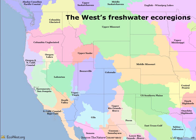Here's a close-up of the West showing its two dozen or so freshwater ecoregions. The geographic definitions don't always line up with the boundaries of river basins. The Colorado River Basin, for example, includes the Colorado, Bonneville, Vegas Virgin, and Gila freshwater ecoregions.